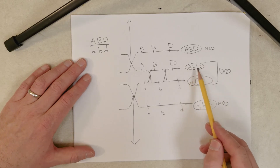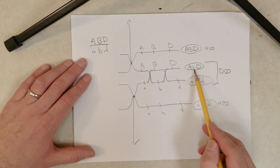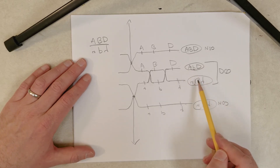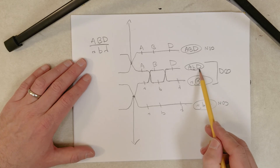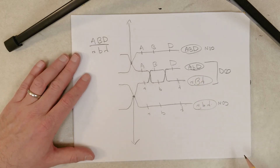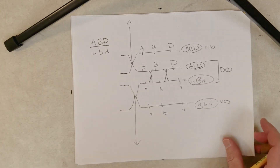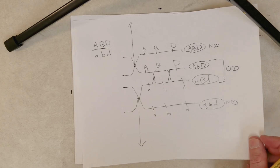So again, non-crossover gametes here and here, and this is the double crossover class of gametes. We can see their genotypes are reciprocals: big A, little b, big D and little a, big B, little d. That's how I would diagram those.